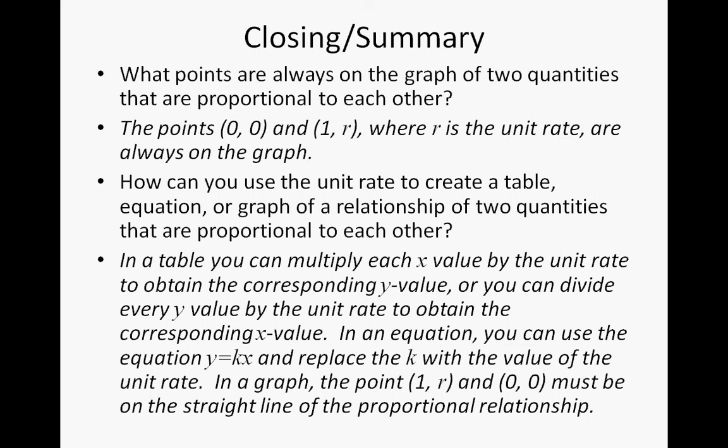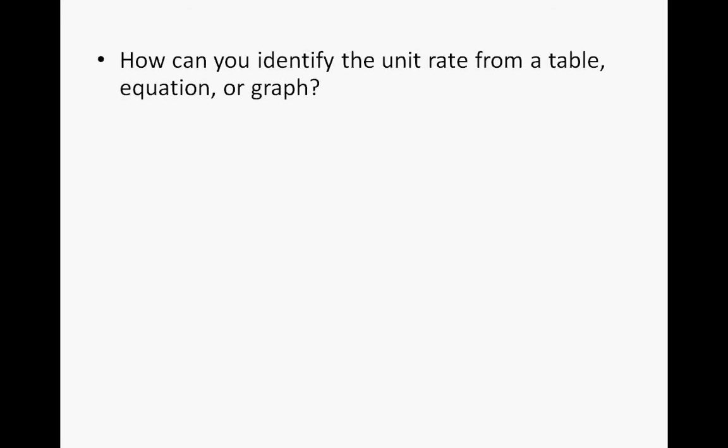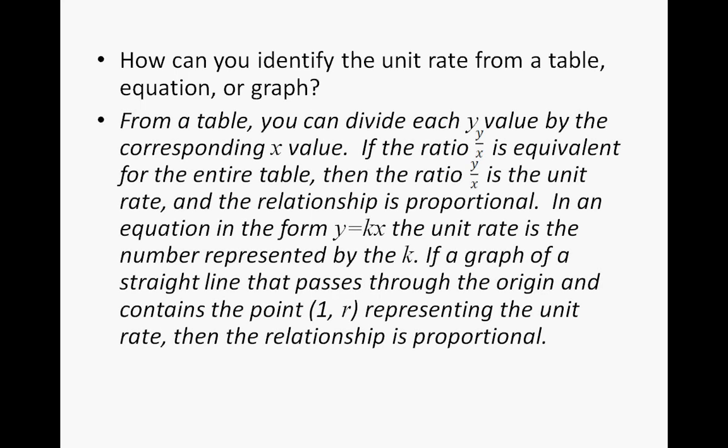We're not quite done yet — there's one more slide. How can you identify the unit rate from a table, equation, or graph? From a table, divide each y value by the corresponding x value to get the ratio y over x, which gives the unit rate. Plug that unit rate back into the equation in the form y equals kx, where k is your unit rate. This also gives you the point 1 comma r representing the unit rate on the graph.